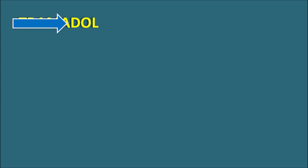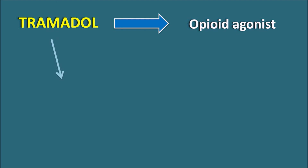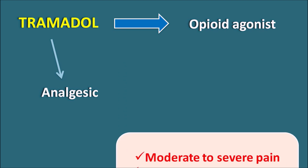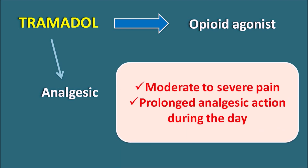What is this drug tramadol? This is one of the opioid agonists. Just like other drugs such as morphine, codeine, and fentanyl, tramadol also belongs to the opioid category. That's why this drug is used as an analgesic, and particularly this drug is indicated for treatment of moderate to severe pain. Whenever analgesic action is required throughout the day, tramadol can be prescribed for prolonged analgesic action.